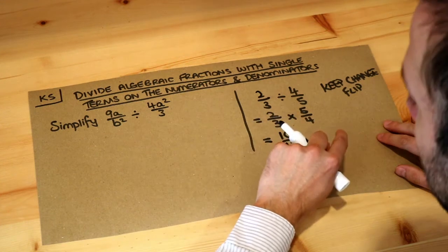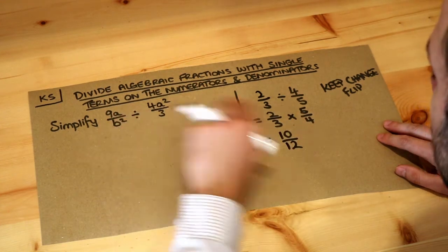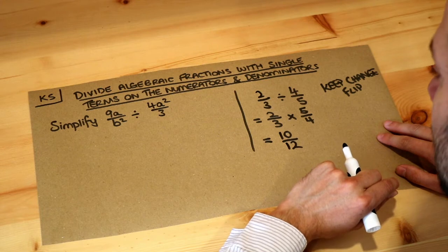Now just because these are algebraic fractions, we have some variables in here like a and b, the math doesn't change, the math remains exactly the same.